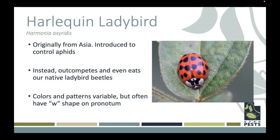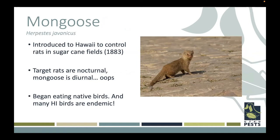Perhaps the most well-known mistake is the mongoose, introduced to Hawaii to control rats in sugarcane fields in the 1800s. It completely slipped everyone's mind that the target rats are nocturnal while the mongoose is diurnal. The mongoose being a predator went around and started eating all the native birds — and we know how endemic Hawaii's birds are, meaning they live nowhere else in the world. So there have been a lot of failures in biological control programs.